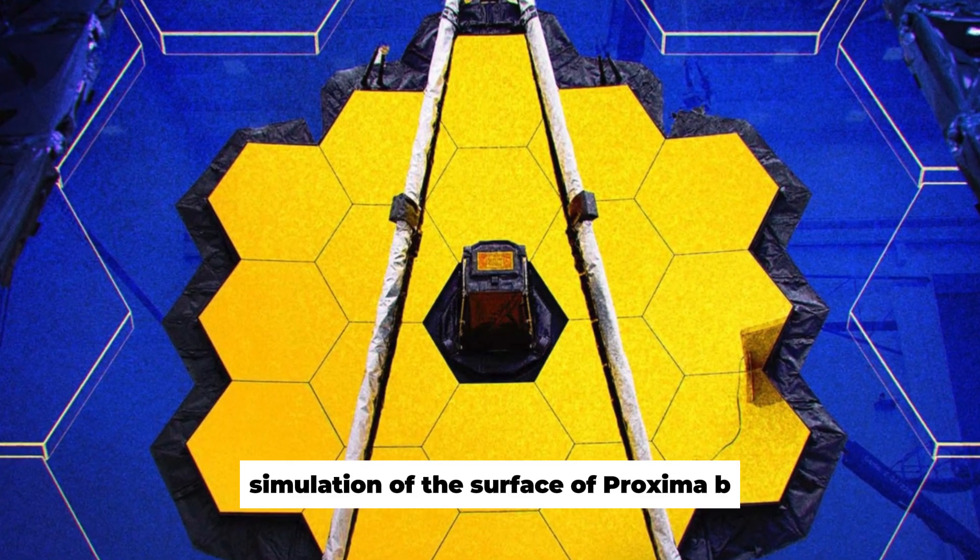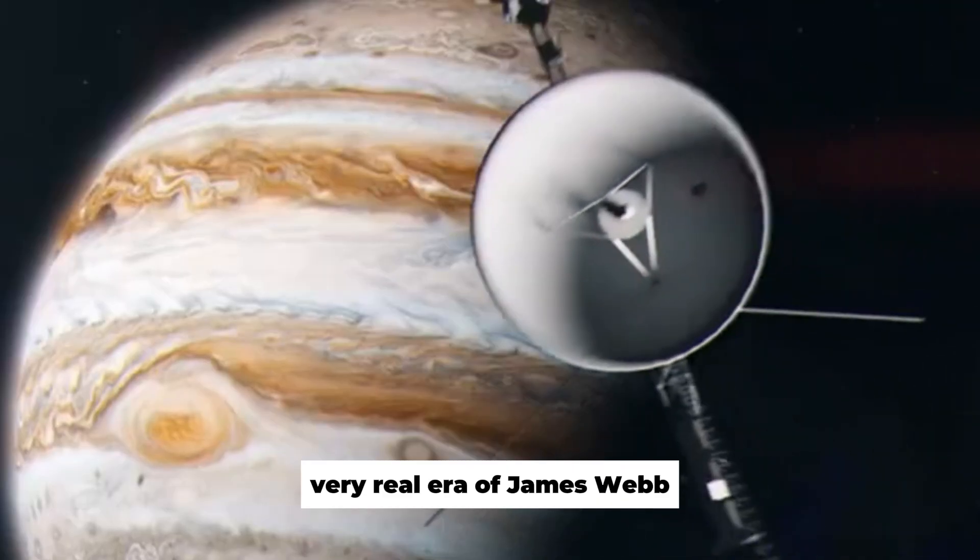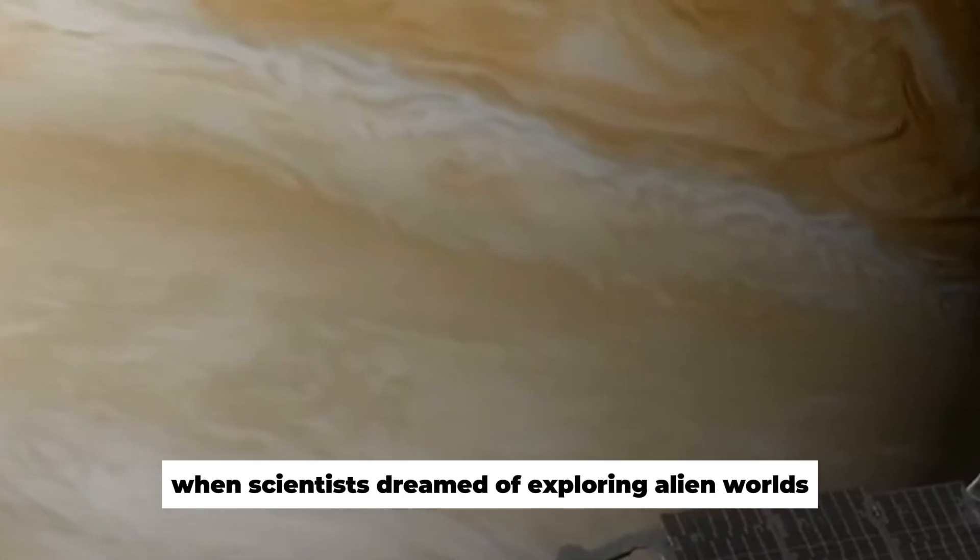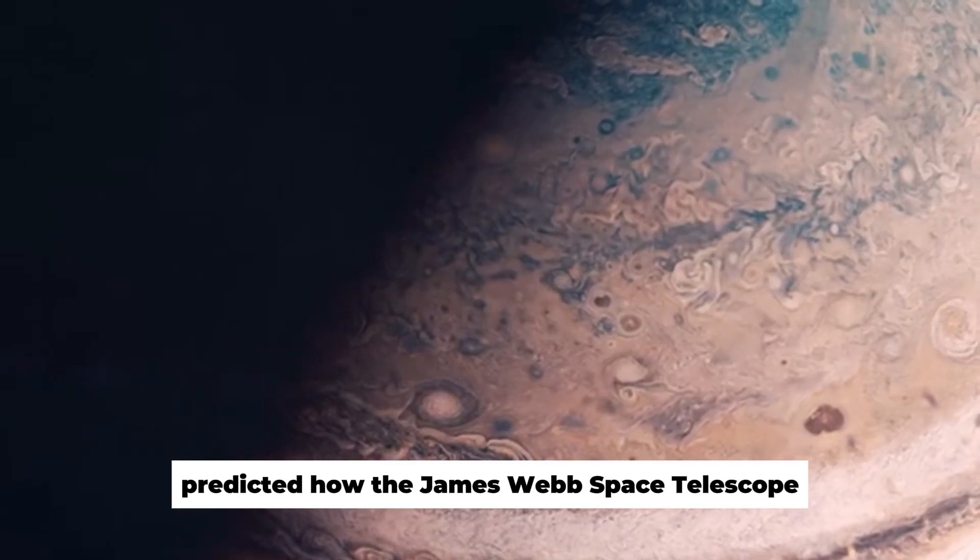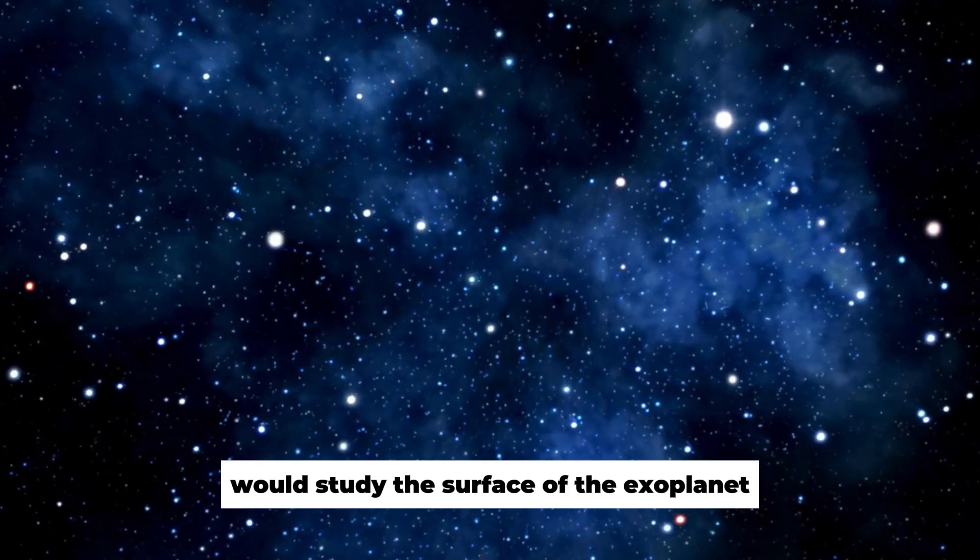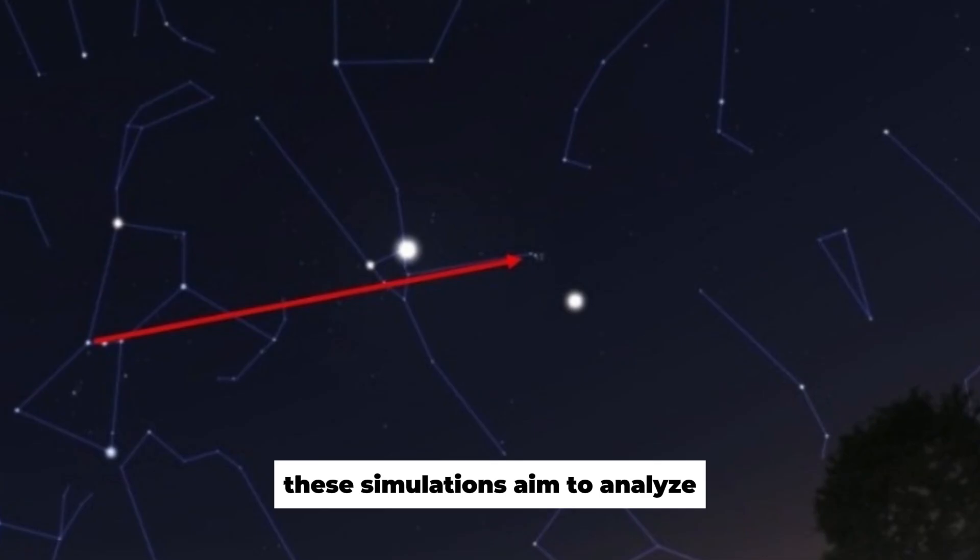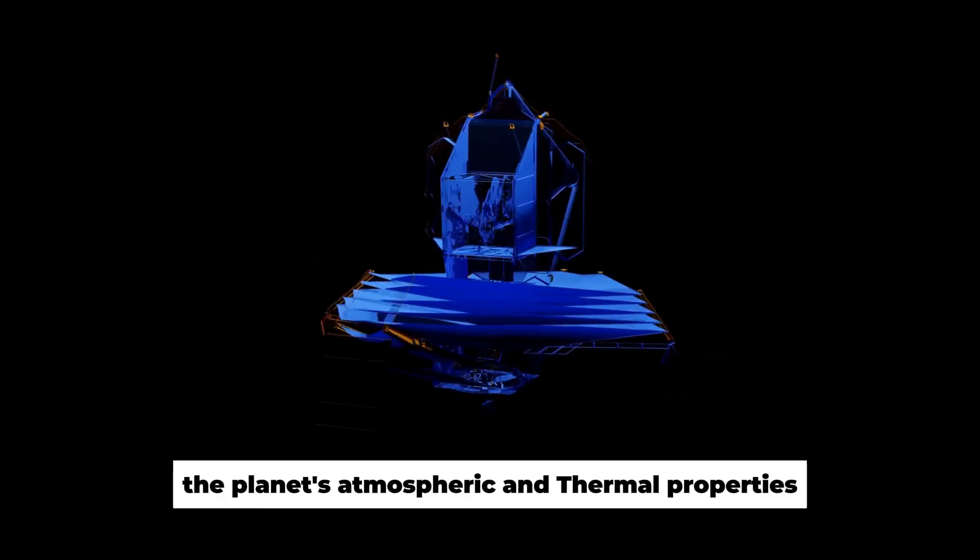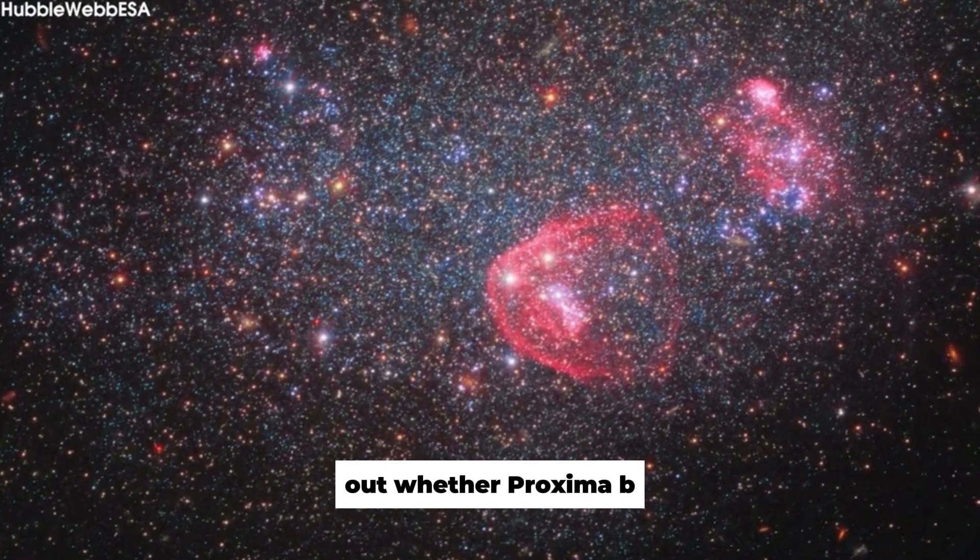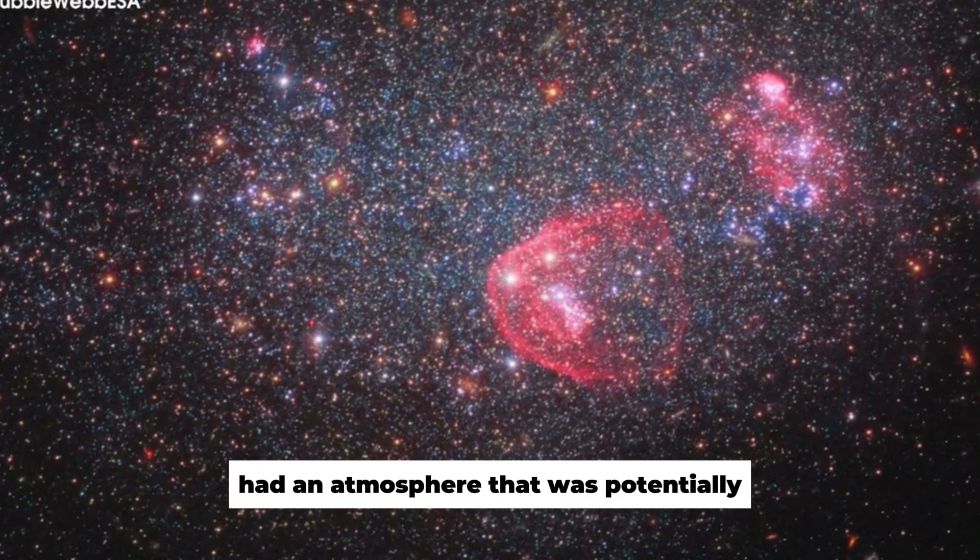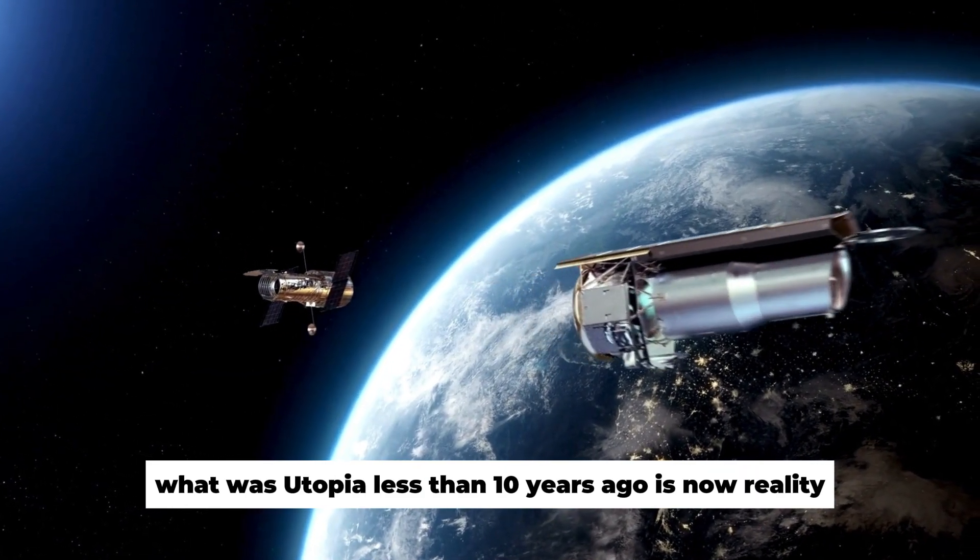Simulation of the surface of Proxima b. It was 2016 and a long way from the now very real era of James Webb, when scientists dreamed of exploring alien worlds. Back then, a groundbreaking simulation predicted how the James Webb Space Telescope would study the surface of the exoplanet Proxima b in an unknown future. These simulations aimed to analyze the planet's atmospheric and thermal properties. By 2016, researchers were already dreaming of finding out whether Proxima b had an atmosphere that was potentially hospitable to life. What was utopia less than 10 years ago is now reality.